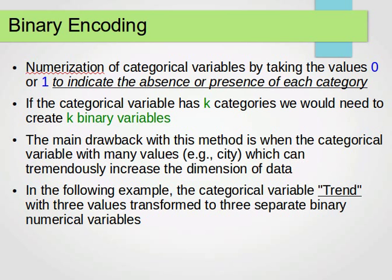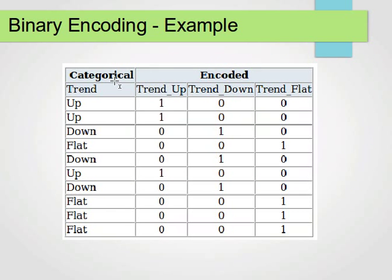Here we have a simple example, where we have a trend variable which has three categories and convert it into a binary variable, as you'll see from this table. We have a categorical variable called trend with three distinct categories: up, down, or flat. For each of them, we create a column. So we create a column for up, a column for down, and a column for flat.